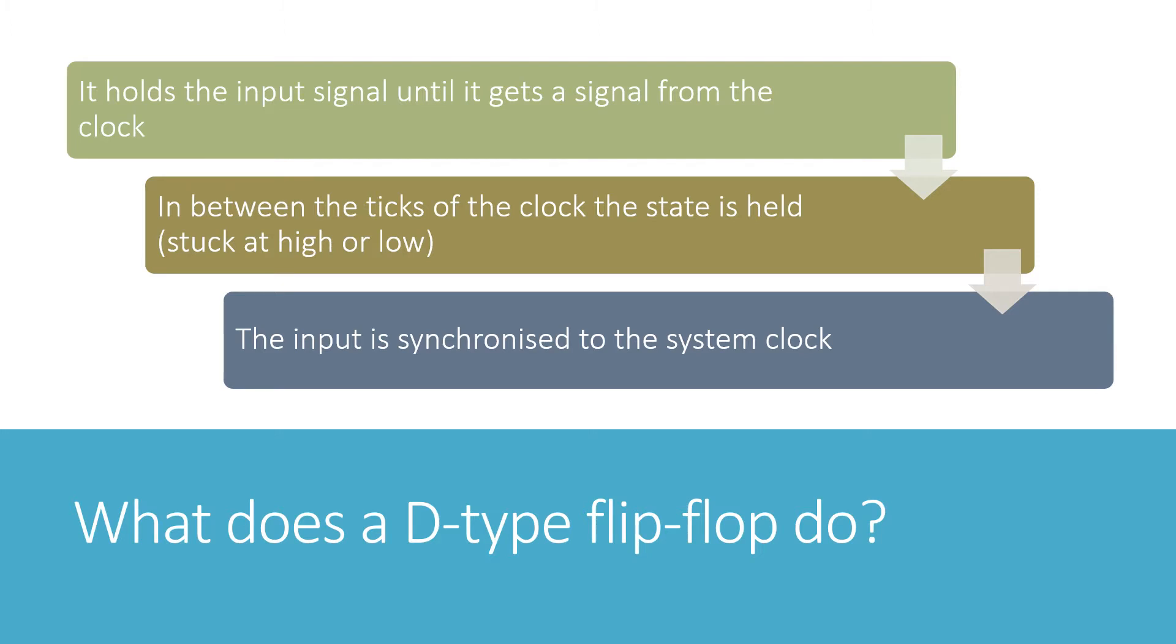The purpose of a D-type flip-flop is to hold the input signal for a fraction of a second until it also receives the signal from the system clock. And at that point it will release the input signal. In between the ticks of the system clock, the input will be held frozen at either high or low. And then when the tick of the clock comes, the input is released to the rest of the computer. And that means that the input is then synchronised to the system clock.